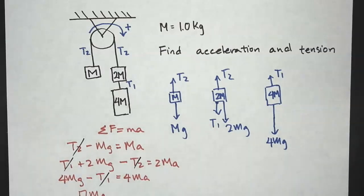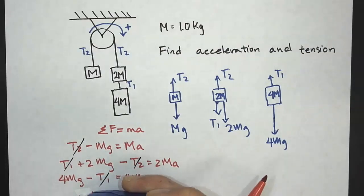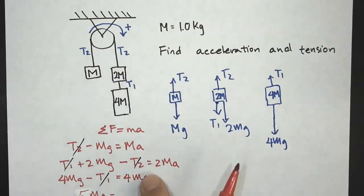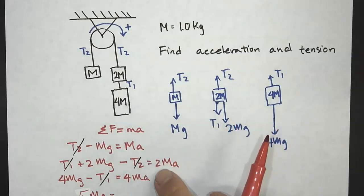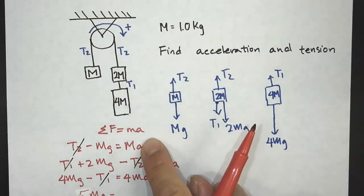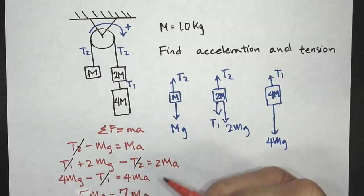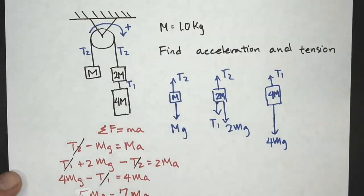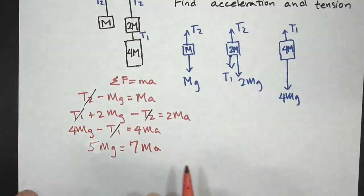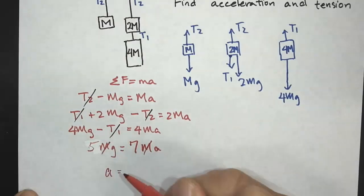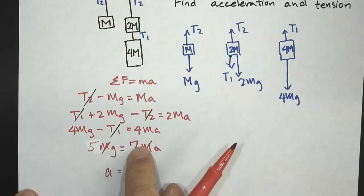Actually, correcting that sum: the left-hand side is 5Mg — wait, let me recalculate. The net positive forces on the right side minus the one going negative: we get 5Mg on the left. On the right-hand side we have 1 + 2 + 4 = 7, so 7Ma. The M's cancel out, and A equals 5g divided by 7.